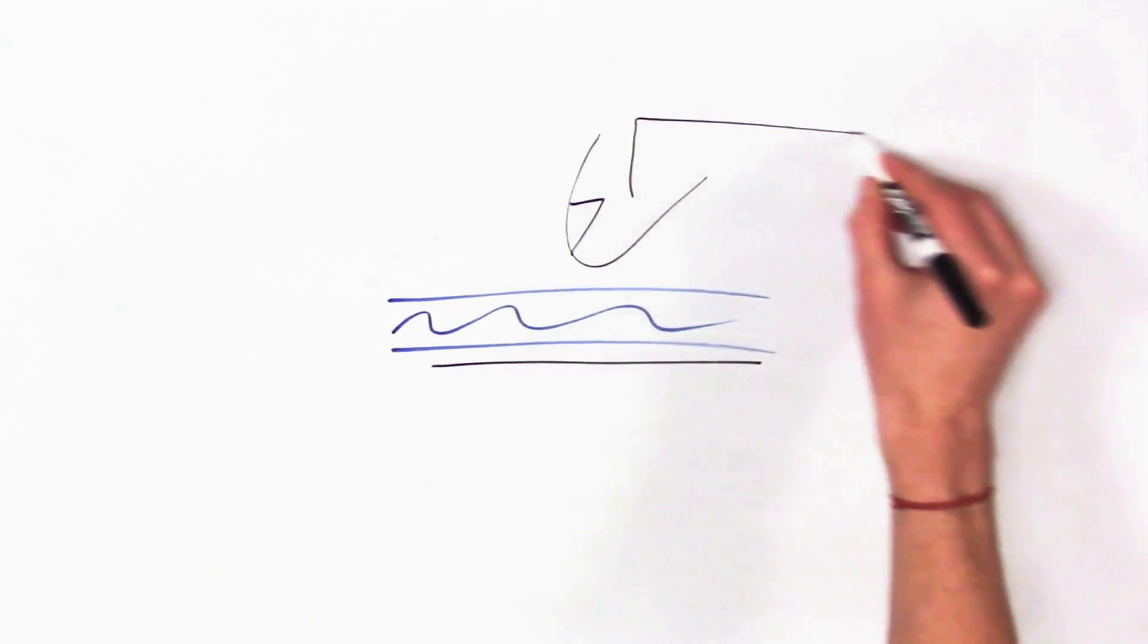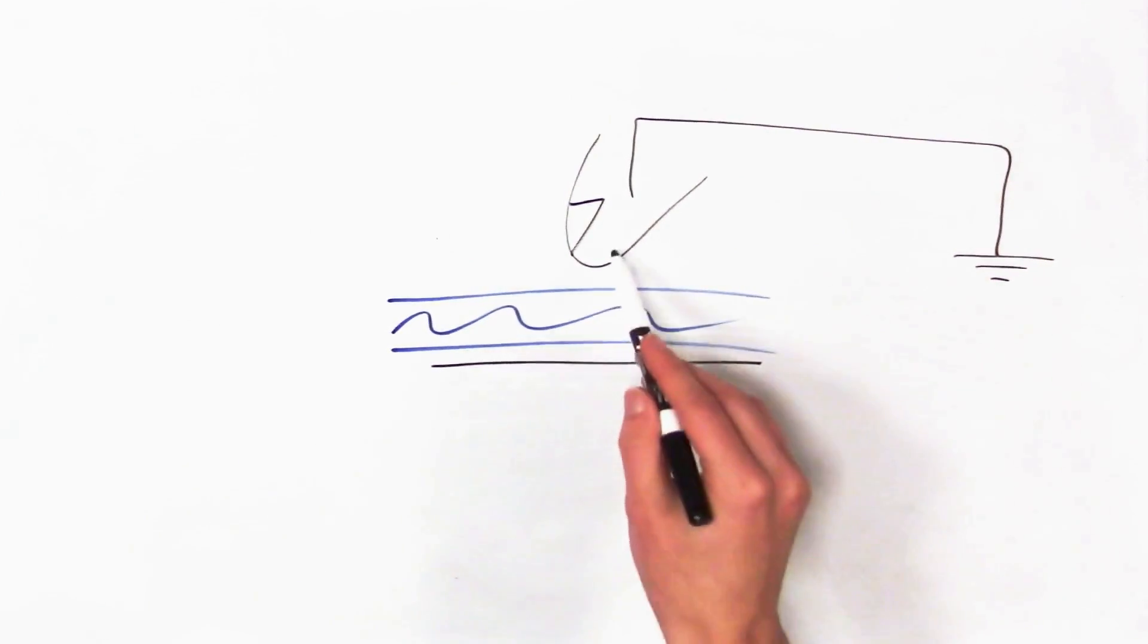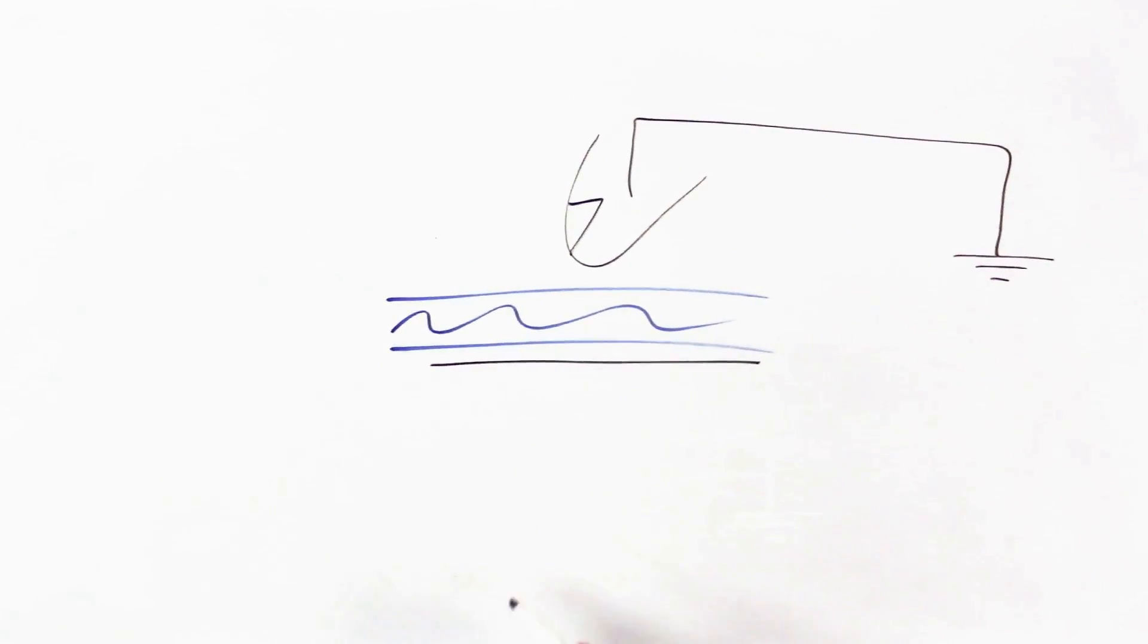For now, imagine that your finger is actually connected to ground. It might be some other voltage, but the results are the same. So, your phone uses a two-step process to figure out this capacitance, which will tell it how far your finger is from the screen, because capacitance changes with distance.